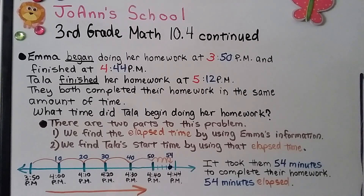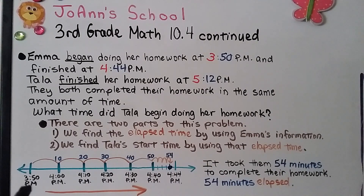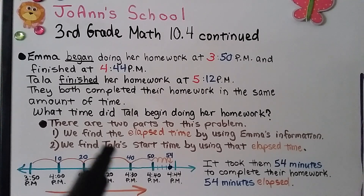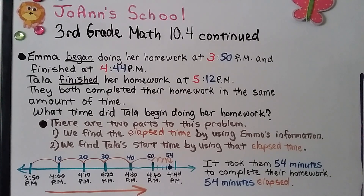For Emma's elapsed time, our number line starts at 3:50 p.m. We count forward in increments: 4:00, 4:10, 4:20, 4:30, 4:40, then count on by ones to 4:44. That's 10, 20, 30, 40, 50 — then 51, 52, 53, 54 minutes. So it took them both 54 minutes to complete their homework — 54 minutes elapsed.